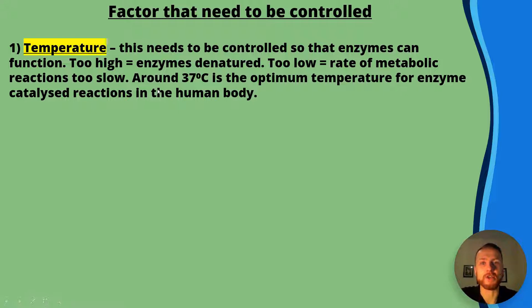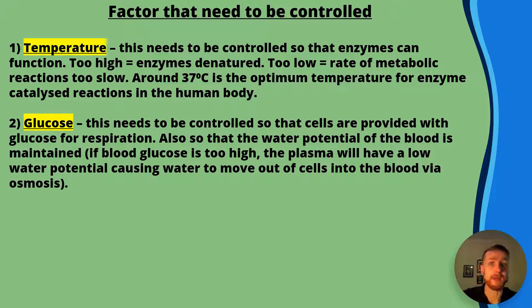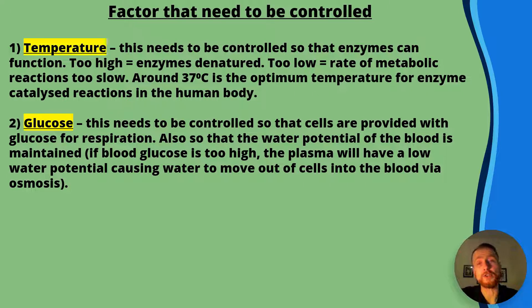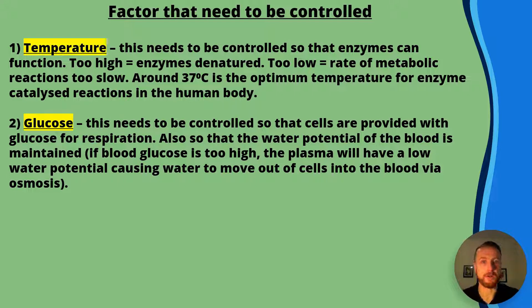The second key variable that needs to be controlled is glucose — we call this glucoregulation. This needs to be constant so that cells are provided with glucose for both aerobic and anaerobic respiration. Glucose is also needed to control water potential because glucose is soluble in water. If glucose is too high, the plasma of the blood will have a lower water potential and that will draw water out from surrounding cells via osmosis, and this can happen vice versa as well.